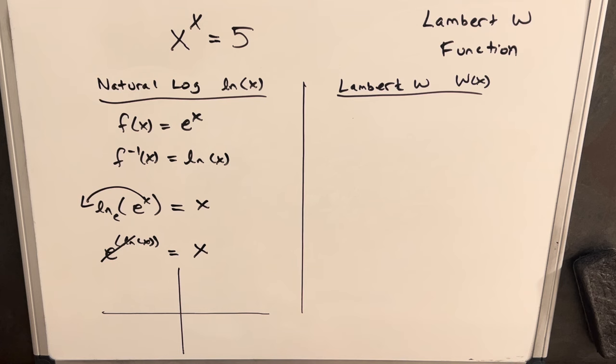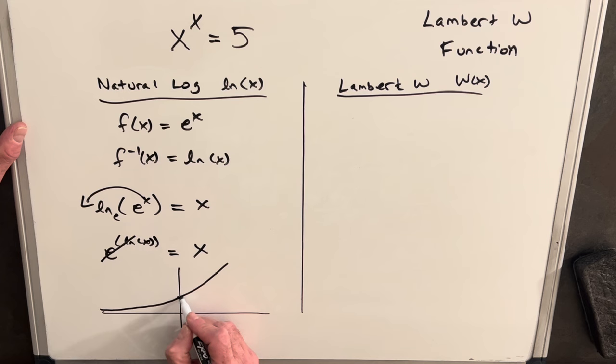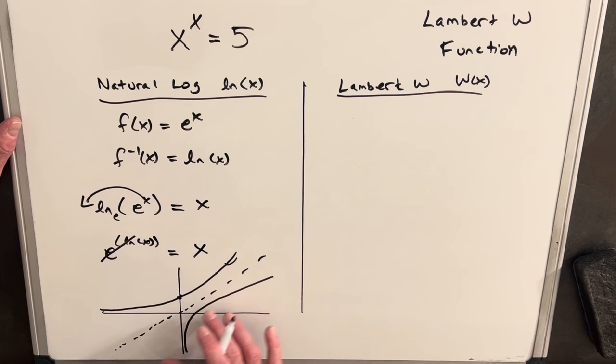And we can also look at this from the perspective of the graph. If we have our function e to the x it looks something like this, right, at zero it's one here, and then because it's an inverse function our ln x is going to be reflected along this line where y equals x so it's going to be like a mirror image here. Excuse my drawing, it's not that great but I'm going to do the best we can.